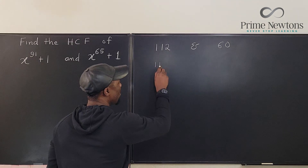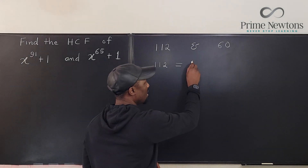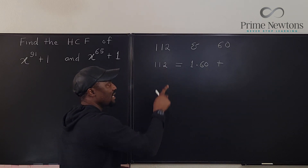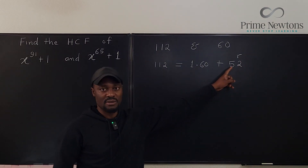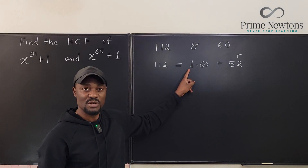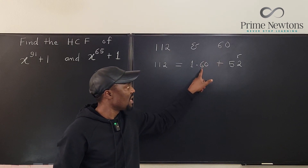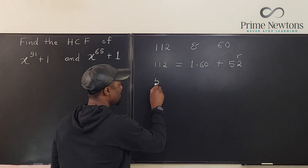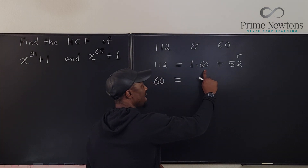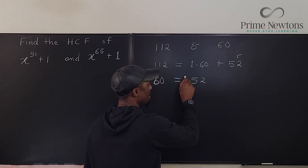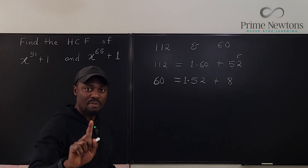We take 112 and say it equals how many 60s fit in 112 — just one — so it's 1 times 60. What's the remainder? 112 minus 60 is 52, so we have 1 times 60 plus 52. Now the next step: take this 60 and write it in terms of the remainder 52. So 60 equals 1 times 52 plus 8.